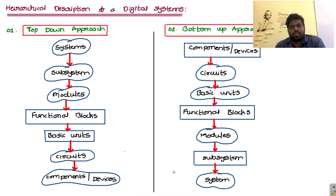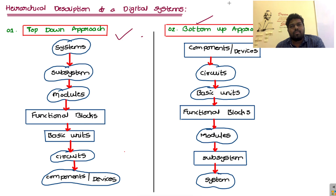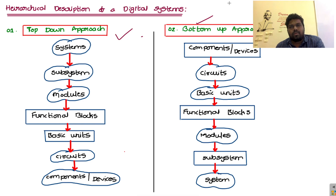There are two types of approaches for hierarchical description: top-down and bottom-up. In the top-down approach, we move from systems to subsystems, then to modules, functional blocks, basic units, circuits, components, and devices. In the bottom-up approach, the process is completely reversed — we start with components and devices, build circuits from them, combine circuits to form basic units, combine basic units to form functional blocks, interconnect functional blocks to form modules, interconnect modules to form subsystems, and finally form a complete system.